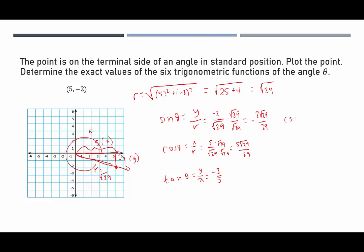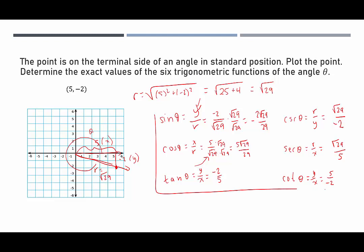For the reciprocal functions, cosecant of theta is r over y = √29 over -2. Secant of theta is r over x = √29 over 5. Cotangent of theta is x over y = 5 over -2, which is -5/2. Those are the six trig functions for the point (5, -2).